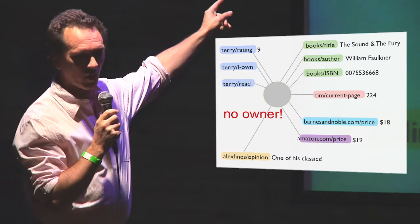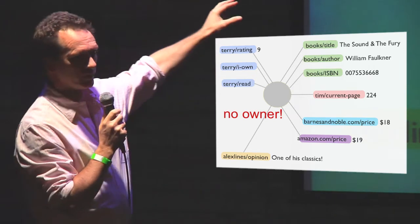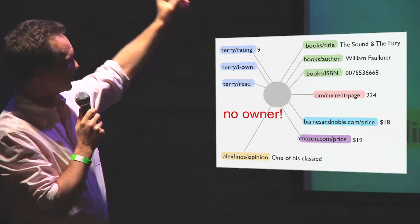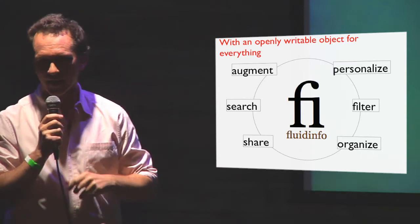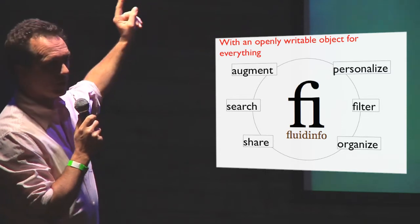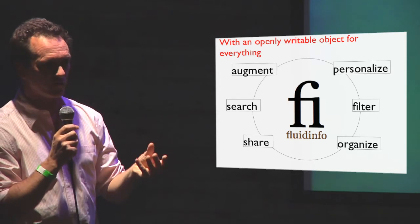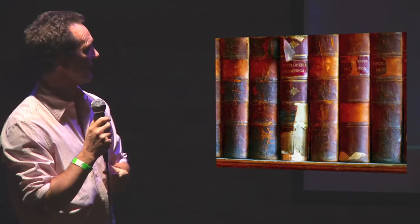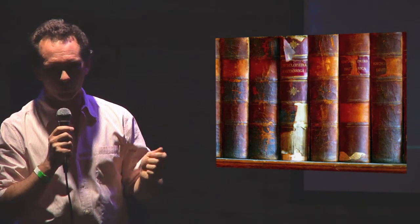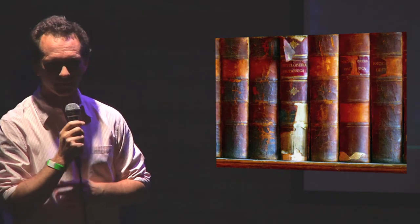The thing that I'm building is a world of objects that don't have owners, where you can walk up to any object. This one is for a book and you can put tags and values on from the website - they're basically like post-it notes: what page you're up to, the price, the title, that you own it, and so on. If you build an architecture where objects don't have owners and you've got an object for everything, you can augment things, personalize things, filter things, search on combinations of data, and put information into places that makes it more valuable. There's a chance that if you do that, you can do for the world of traditional databases something like what Wikipedia did for the world of encyclopedias. Thank you.